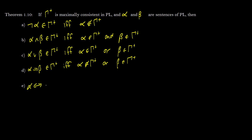We have the biconditional of alpha and beta is going to be in gamma plus if either alpha is in gamma plus and beta is in gamma plus, or alpha is not in gamma plus and beta is not in gamma plus. So there you have it — here are five things that we need to prove.